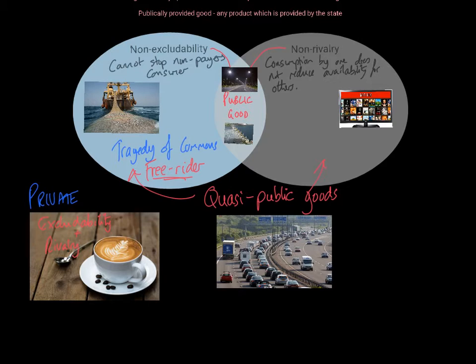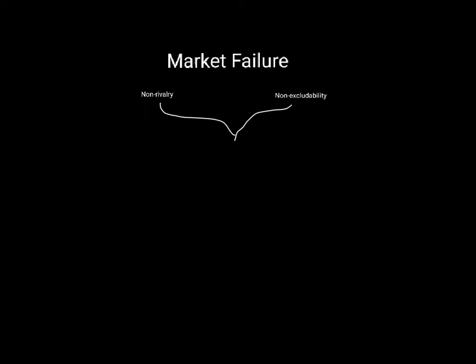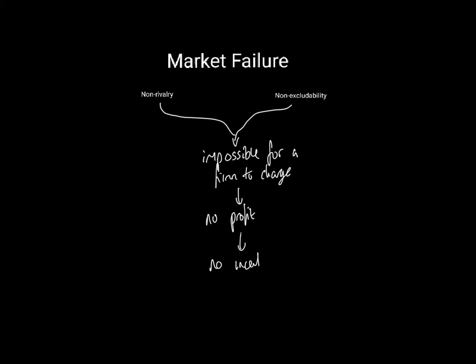The last thing to consider is what public goods mean in terms of markets and why they fail. This causes market failure because the fact that public goods are non-rival and non-excludable makes it impossible for a firm to charge for their use. If it is impossible to charge, there is no way to make a profit. If there is no profit, there is no incentive. And if there is no incentive, there will be no provision.